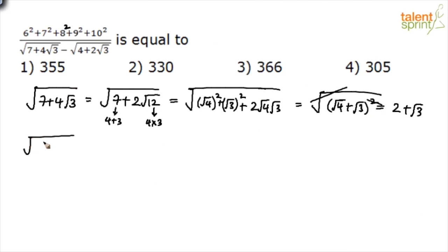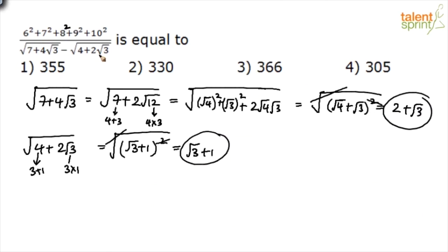Similarly, work on the other term: 4 plus 2 root 3. This is like 3 plus 1, and 2 root 3 is root of 3 times 1. We can directly take it as root 3 plus 1 whole squared under root. This cancels, leaving root 3 plus 1. Substituting 2 plus root 3 and root 3 plus 1 in the denominator: 2 plus root 3 minus root 3 minus 1. Plus root 3 minus root 3 cancels, and 2 minus 1 is 1. So denominator equals 1.